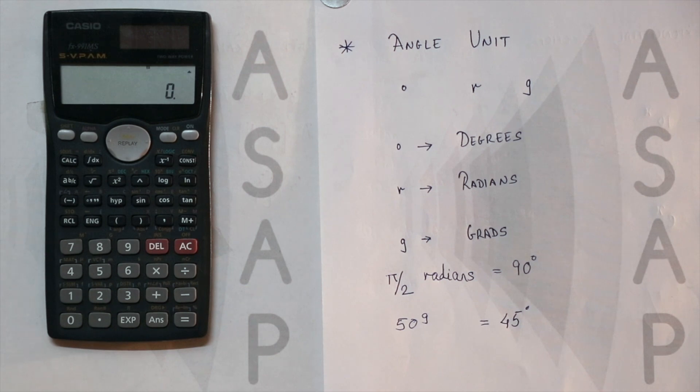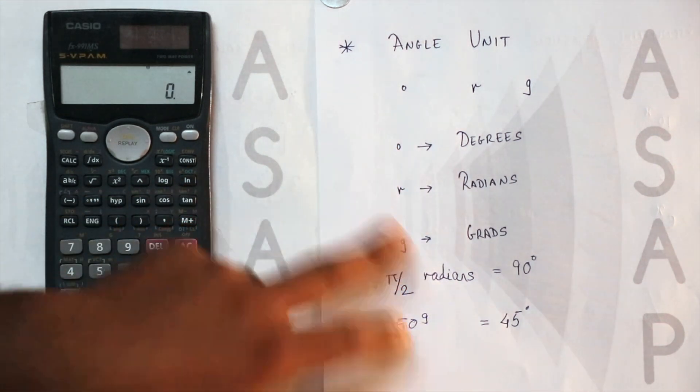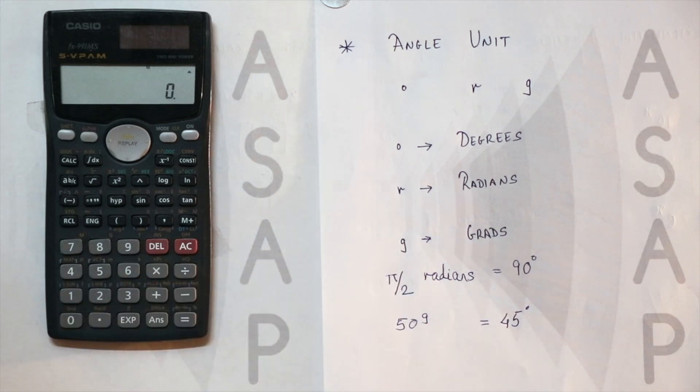Hello guys, today we are going to see how to use the angle units provided in calculator 991MS. Here you can see degrees, radians, and grads. It's pretty simple. Whenever you input a function from the menu that you want to perform, you then use these angle units.